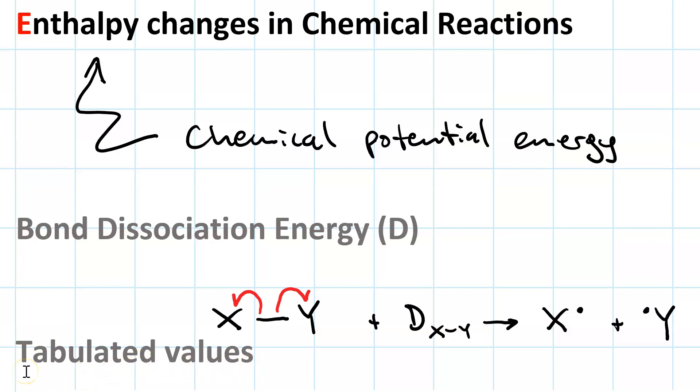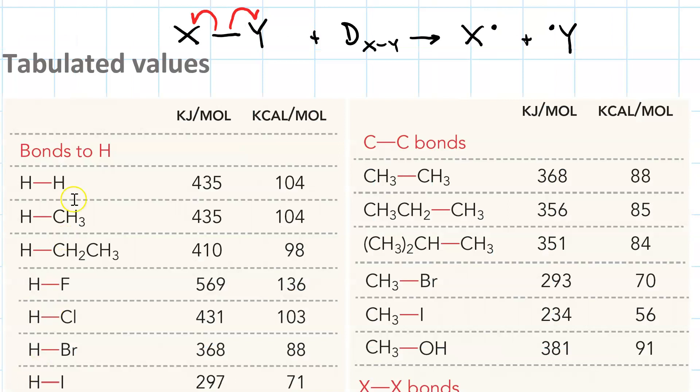Lots of values for bond enthalpy are tabulated. For instance, in our ochem textbook, it takes 435 kilojoules to break a mole of H-H bonds. It takes 435 kilojoules to break one mole of methyl-hydrogen bonds, but only 410 kilojoules to break one mole of ethyl-hydrogen bonds.